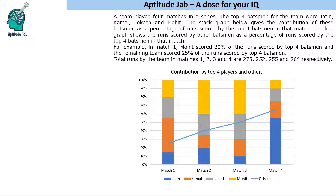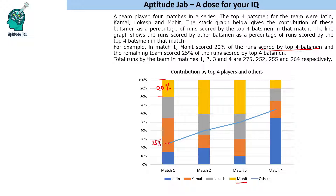For example, in the first match, Mohit scored 20 percent of the runs scored by the top four batsmen — Mohit is the yellow one, shown from 80 to 100 on the bar. So he scored 20 percent of the top four's total. The remaining team scored 25 percent of the runs scored by the top four batsmen — that's 25, between 20 and 30 on the line graph.